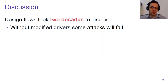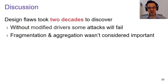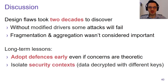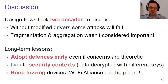You may be wondering why it took more than two decades to discover these design flaws. I think there are two reasons. First, without using modified drivers, some of the attacks will fail because important fields will be silently overwritten by the driver. Perhaps more importantly, in the past, security researchers didn't pay much attention to fragmentation and aggregation functionality. There are also long-term lessons we can learn: we should adopt defenses early, even if there are only theoretical concerns; we should properly isolate security contexts in both specification and implementations, properly separating data decrypted under different keys; and finally, we should keep fuzzing devices, where the Wi-Fi Alliance can help by doing basic tests while certifying devices.